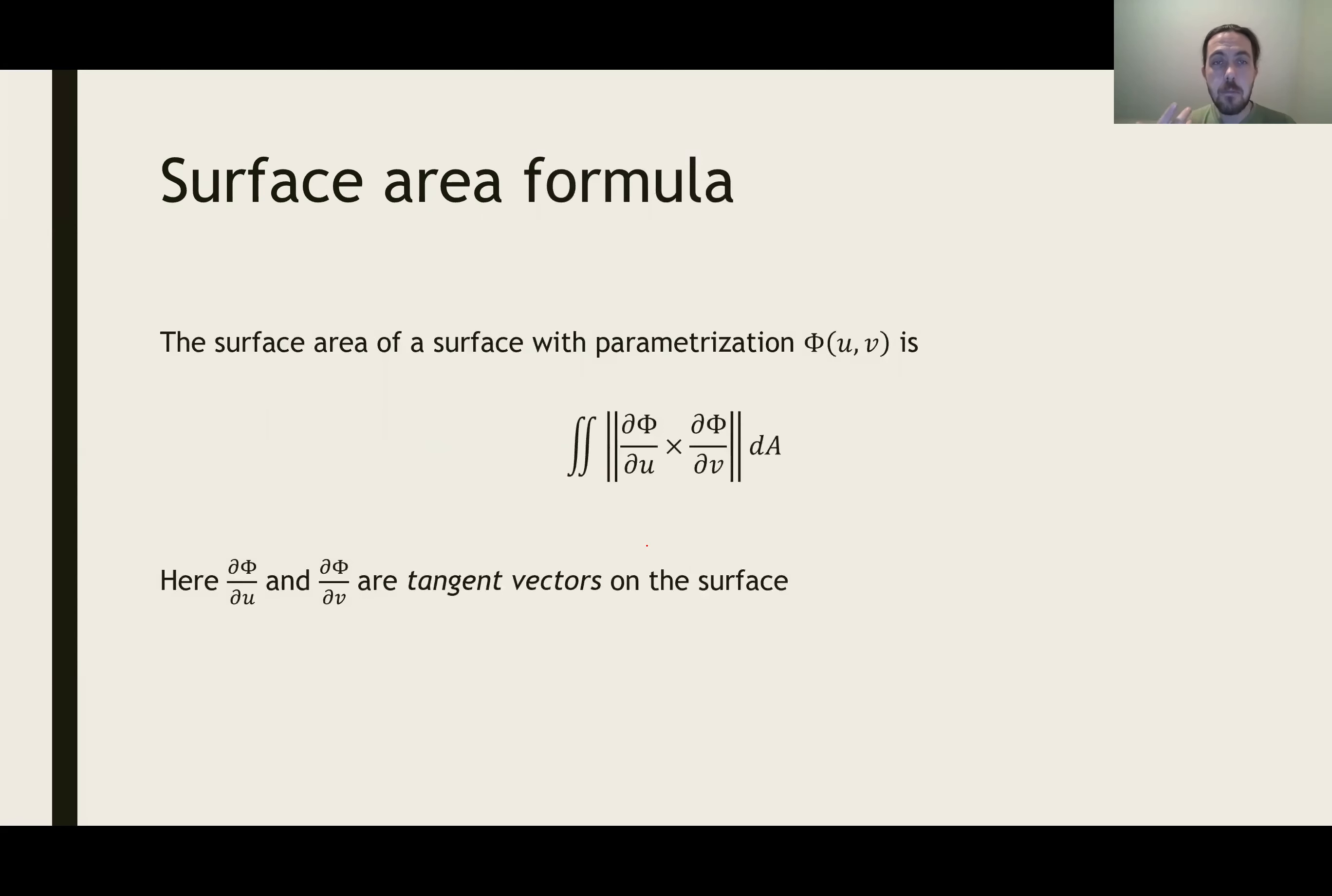And in exact form, if we've got a surface area with a parameterization phi of u,v, a function of two variables, then the surface area is given by this formula. Now the formula looks a little bit strange, so we'll go over it in a little bit more detail. What we do is we take our formula phi, and it has two partial derivatives. One of them is a partial derivative with respect to u, and one of them is a partial derivative with respect to v. And those are what are called the tangent vectors to the surface. And what we do is we take those, we take the cross product of those two tangent vectors, then we take the length, and then we integrate that up.